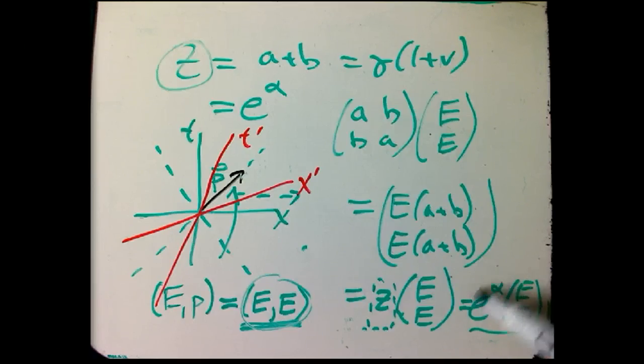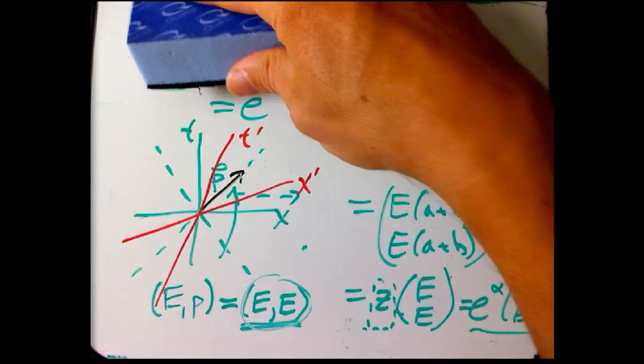okay? So what this says is that the X prime and T prime observer is going to see the photon with a different energy and momentum multiplied by E to the alpha or Z, and that's called the red or blue shift parameter because if you just add in a tiny little bit of quantum mechanics,